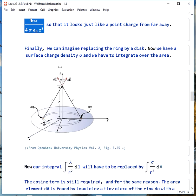Finally, what's a little bit harder, we could imagine we replace the ring by a disk. So now we have a surface charge density, and we have to integrate over the area rather than around the ring.